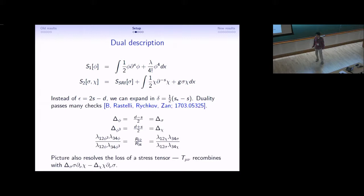This passes a number of checks. The arguments in the previous slide showed that phi was exact to zero loops and phi cubed was exact to one loop. In the dual picture, it's reversed. So chi is exact to zero loops and sigma is exact to one loop. Also, up to an assumption that we make about the normalizations, which we think is valid, we reproduce the non-perturbative OPE ratio.